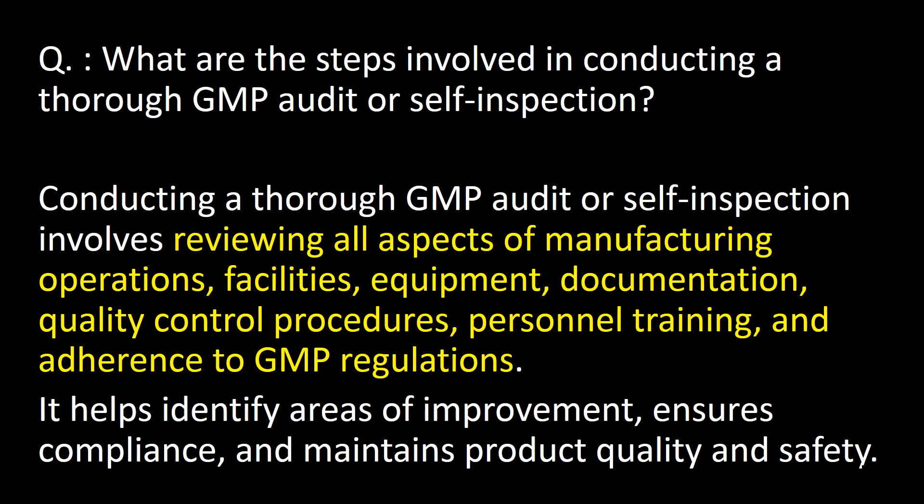What are the steps involved in conducting a thorough GMP audit or self-inspection? Conducting a thorough GMP audit or self-inspection involves reviewing all aspects of manufacturing operations, facilities, equipment, documentation, quality control procedures, and personnel training, and adherence to GMP regulations. It helps to identify areas of improvement, ensures compliance, and maintains product quality and safety.